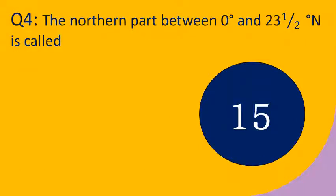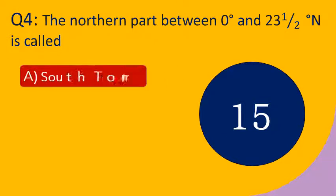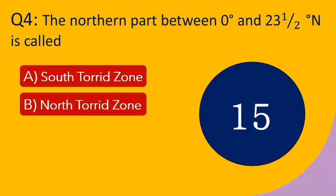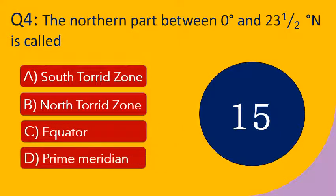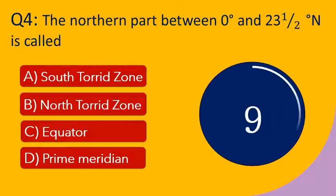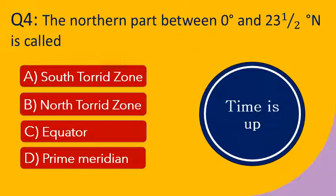Question number 4: The northern part between 0 degrees and 23 and a half degrees north is called — options: A. South Horizon, B. North Horizon, C. Equator, and D. Prime Meridian. Your time starts now. Your time is up. The right answer is North Torrid Zone. The northern part between 0 degrees and 23 and a half degrees north is called the North Torrid Zone.